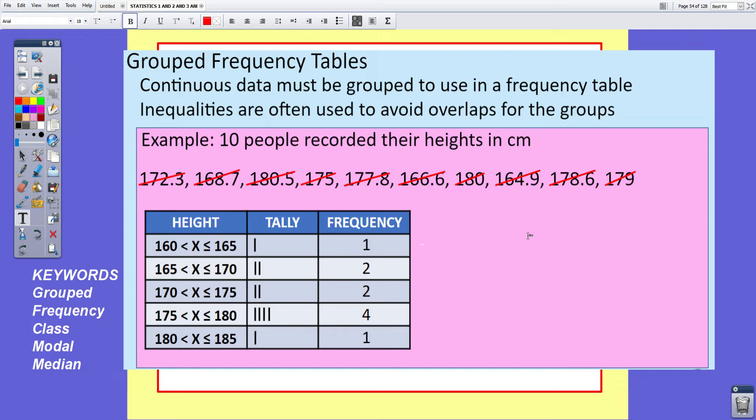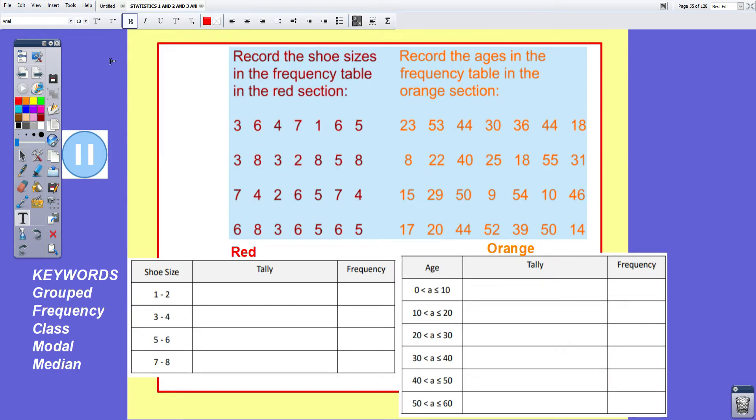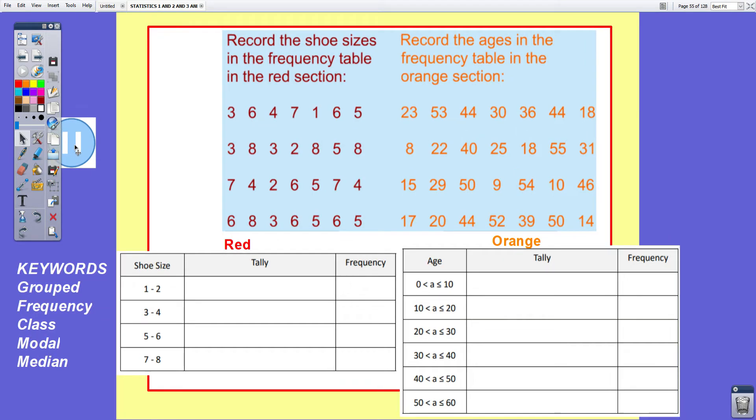Now that's all there is to completing a grouped frequency table. What I would like you to do is get a little bit of practice in completing grouped frequency tables. There are two examples here. Record the shoe sizes in the frequency table in the red section. Record the ages in the frequency table in the orange section. If you get the idea fairly quickly there's only need to do one of these, but you will have to copy it down. Pause the video while you do this.